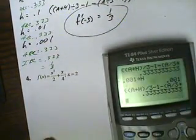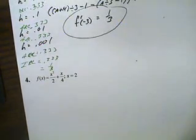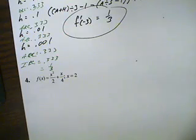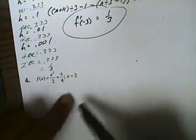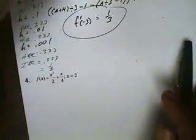Let's try this again. This time we have a function f of x equals x squared over 2 plus x over 4, and we want to find the instantaneous rate of change at x equals 2. We'll assume a equals 2, and then h will be 1, 0.1, 0.01, and 0.001.